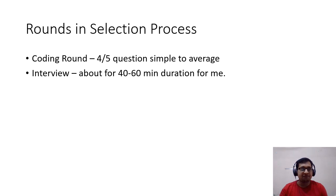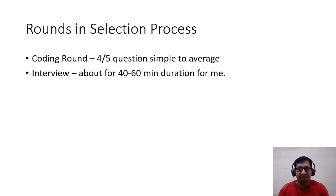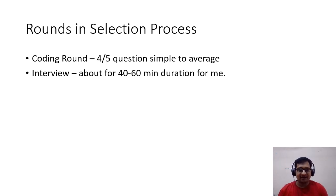In the coding round, there are four to five questions. They range from simple to moderate difficulty — for example, finding the XOR of two numbers or finding the trailing zeros of a number. I don't think it's tough to clear the coding round if you have a basic idea about coding.